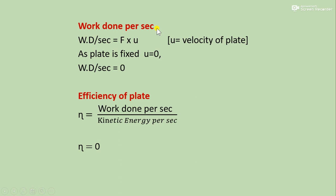Now work done per second, that is power, is the product of force times plate velocity. Now as the plate is stationary, plate velocity is zero. That's why power is zero. Now as the power is zero, that's why in the efficiency formula the ratio becomes zero. That's why for stationary plate, efficiency is zero.